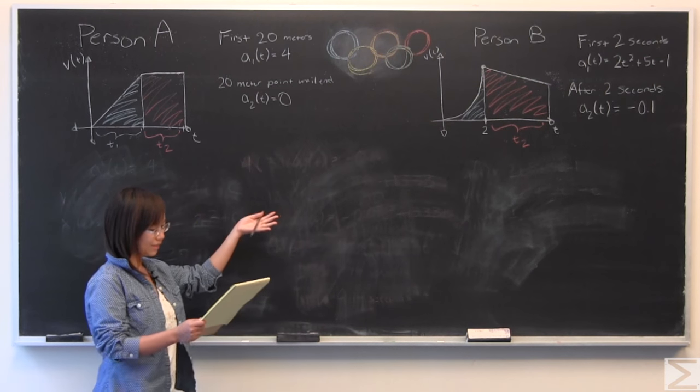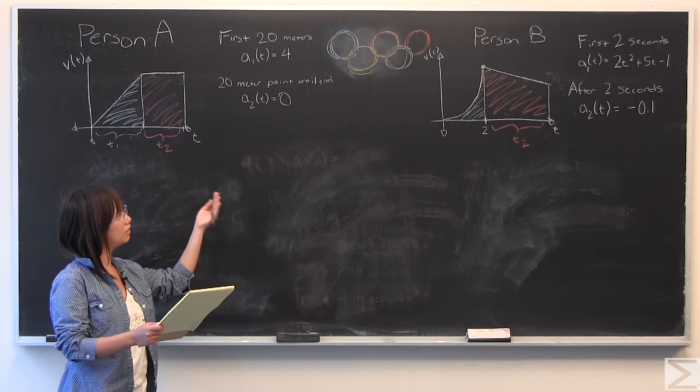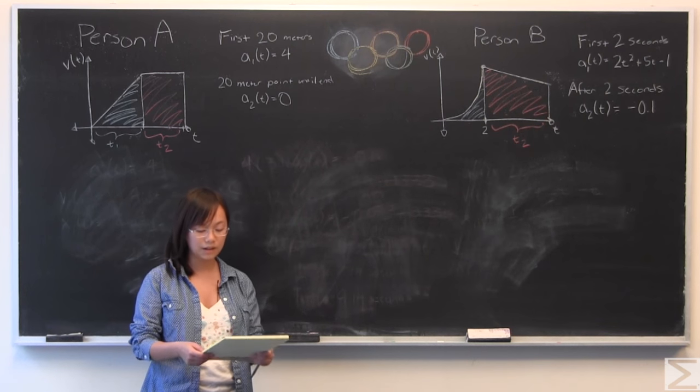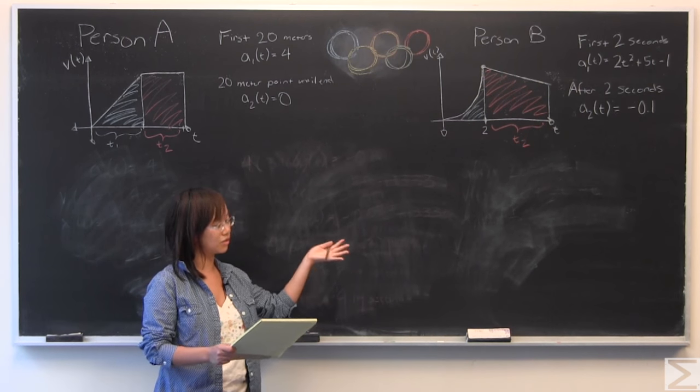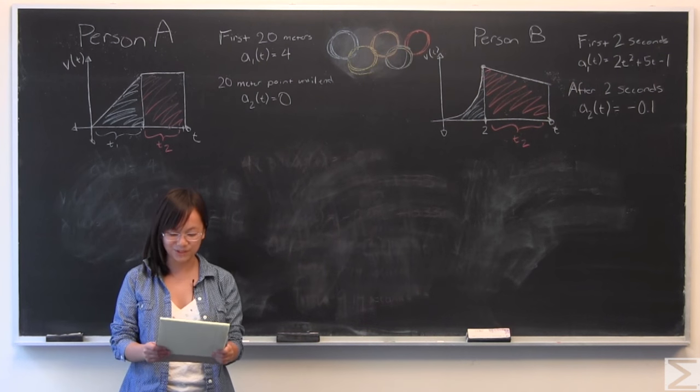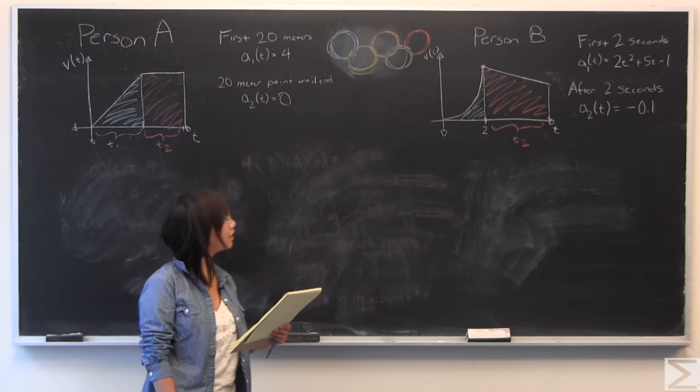So this week's problem of the week tells you about two people, person A and person B, and it tells you about how they run. And what we're going to solve is we're going to find out how long it takes them to travel 100 meters, just like in the 100 meter dash in the Olympics.